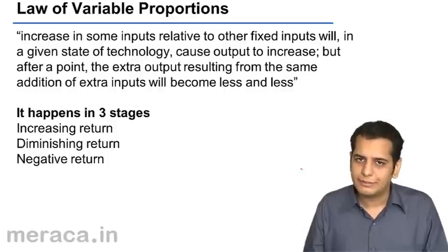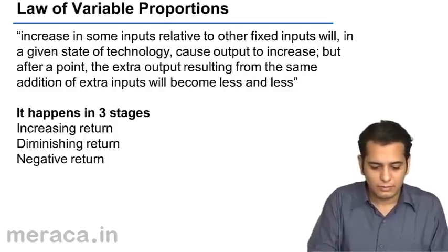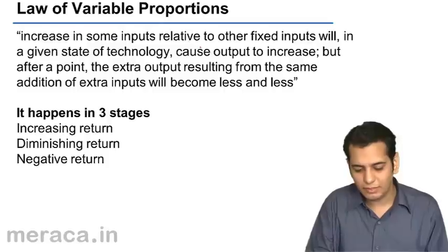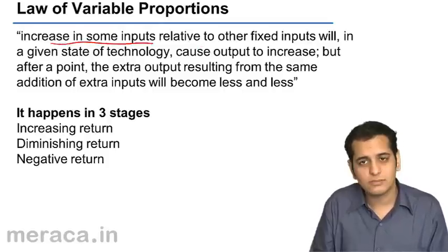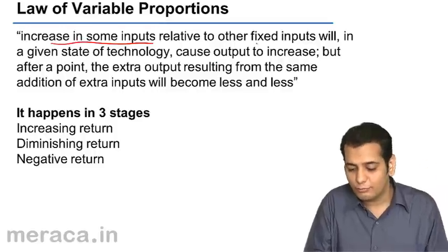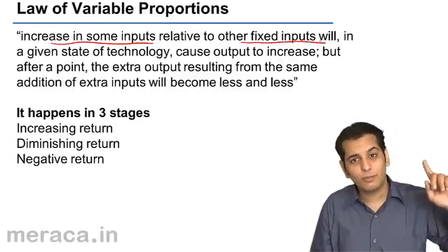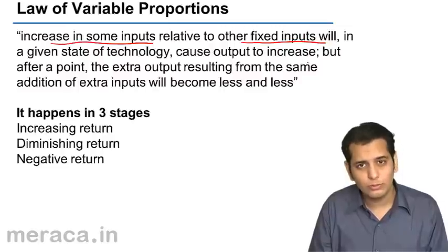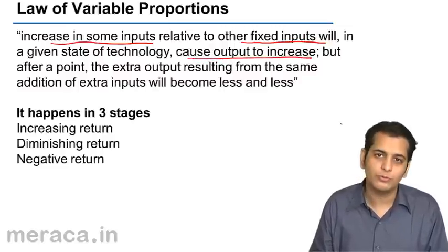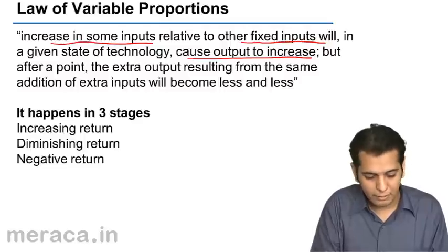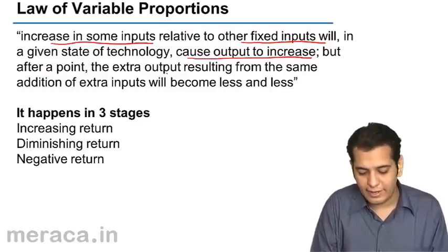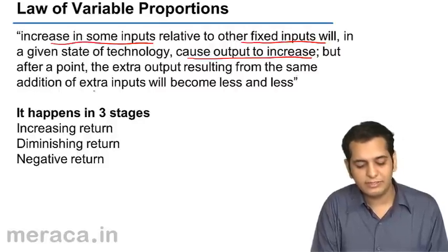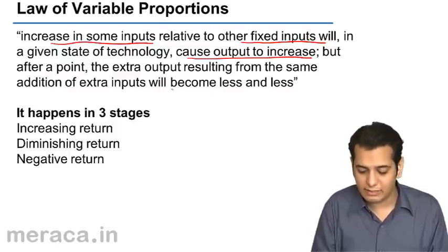Let's understand the Law of Variable Proportions in detail. It says that an increase in some inputs relative to other fixed inputs will, in a given state of technology, cause output to increase. But after a point, the extra output resulting from the same addition of extra inputs will become less and less.